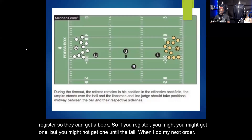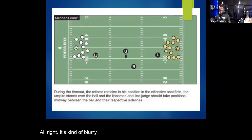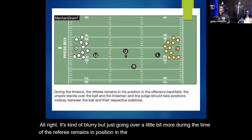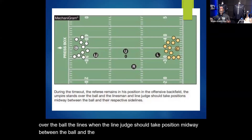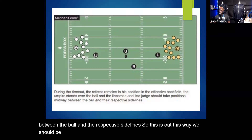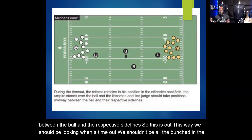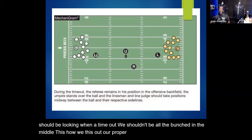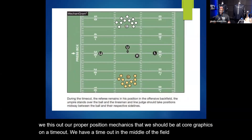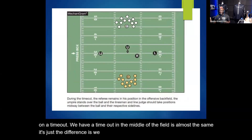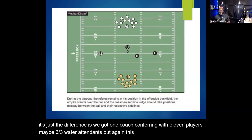During a timeout, the referee remains in position in the offensive backfield, the umpire stands over the ball, and the linesman and line judge take positions midway between the ball and their respective sidelines. That is our proper position during a timeout — we should not be bunched together in the middle of the field. When the conference is between the nine-yard marks, it's nearly the same positioning, with one coach conferring with 11 players and up to three water attendants.